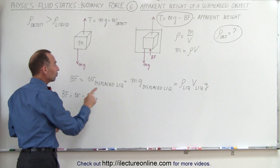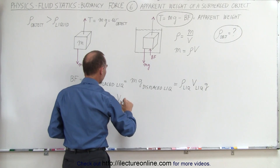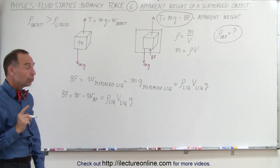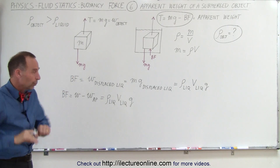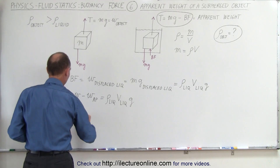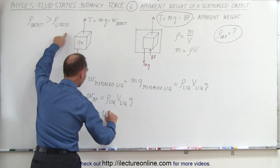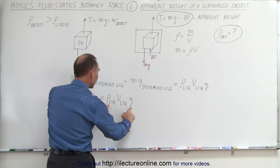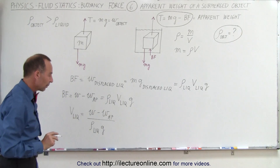The buoyancy force is also equal to the density of the liquid times the volume of the liquid times g. At this point, I'm going to solve this equation for the volume of the liquid — to find out how much liquid was displaced, which is also the volume of the object. So the volume of the displaced liquid equals the weight measured in air minus the apparent weight when submerged, divided by the density of the liquid times g.